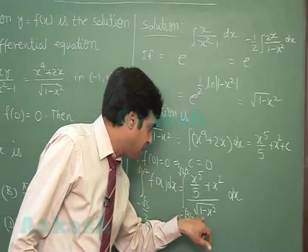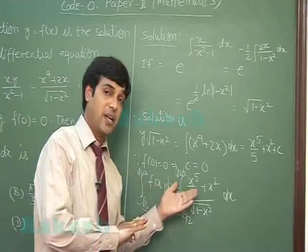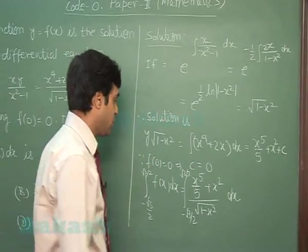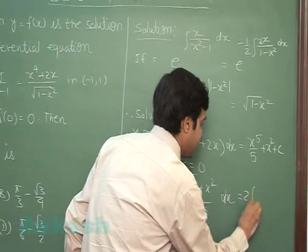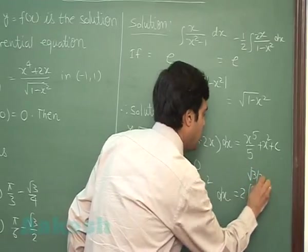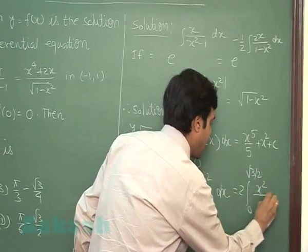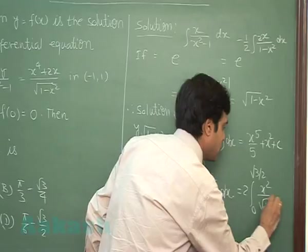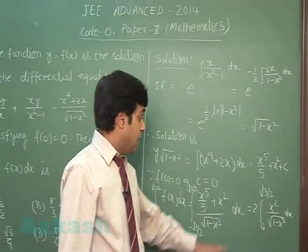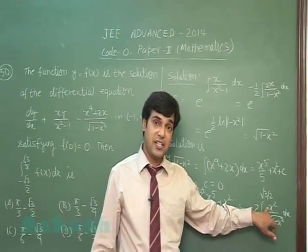When I separate it, I see the first term is odd function. That will become 0. Second is even. So, the result can be written as twice 0 to root 3 by 2 x² upon root(1 minus x²) dx.